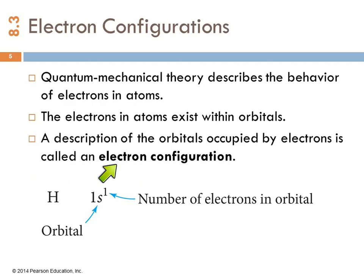Electron configuration describes which orbitals have electrons in them and how many electrons are in the orbitals. So if we look at hydrogen, hydrogen has one electron and it's normally going to hang out in the 1s orbital. And so we use a superscript to tell us how many electrons are in that orbital. This is one of the few instances where chemists do write the number 1.